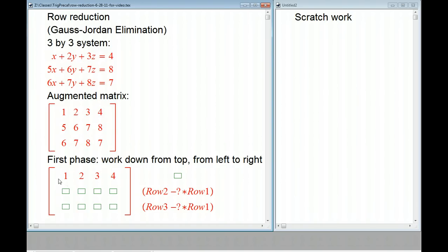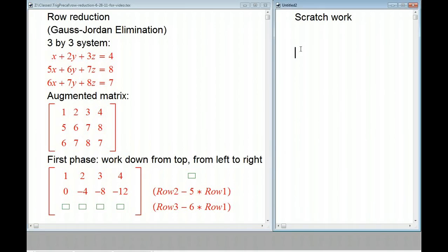So the first phase, we work down from the top left to right. We leave the top row alone and use it as a tool, and then this is going to be the pivot. That's still 1, so that's nice. This means I'm going to use 5 times row 1 and subtract it here, and 6 times row 1 and subtract it here. So 5 minus 5 is 0, 6 minus 5 times 2 is minus 4, 7 minus 15 is minus 8, and 8 minus 20 is minus 12. You can always do scratch work. I recommend it.